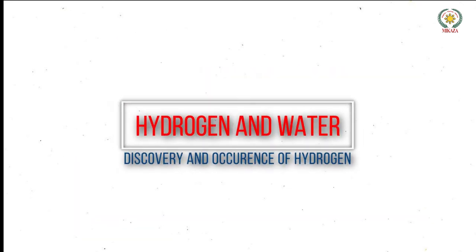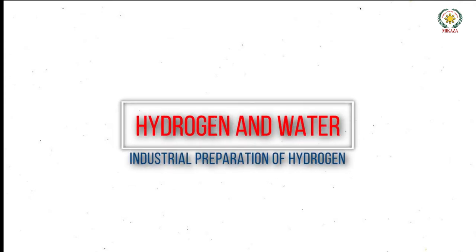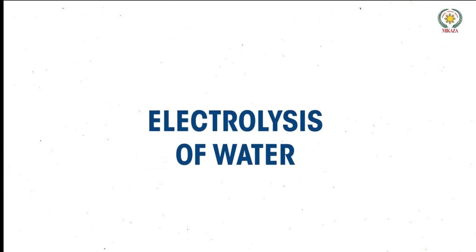So finally, we know who discovered hydrogen and how is hydrogen occurring in the atmosphere. Start learning the processes through which we can manufacture hydrogen and we will be learning the three important processes which are used in industries for the manufacturing of hydrogen on a large scale. Let's talk about the first process which is called electrolysis of water.